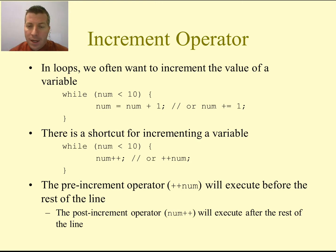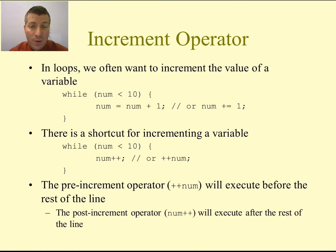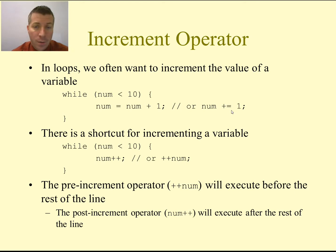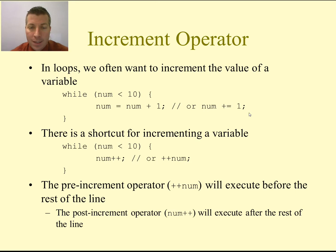The increment operator. Oftentimes in loops we want to increment the value of a variable. We can write num equals num plus one, or use the shortcut plus-equal operator: num += 1, which is exactly the same. We have this kind of operator for subtraction, multiplication, division, and modulus — that is minus-equal, star-equal, slash-equal, and percent-equal. You can use whatever number you want; it doesn't have to be one. A one just increments by one, but you can use any other value.